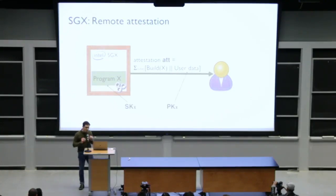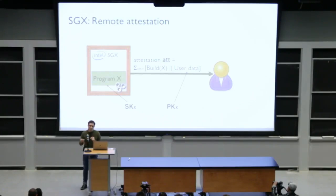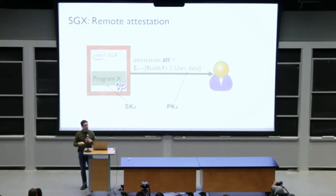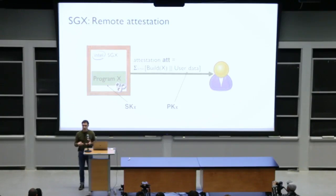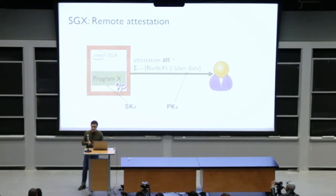Additionally, SGX provides another feature known as remote attestation, which enables a platform to prove to a remote party that a particular application is running in the enclave. This proof can be accompanied by a key pair bound to a particular program instance, so that a remote party can communicate over a secure channel to the program, and the program can digitally sign data in a way such that the remote party can verify it came from that particular program.